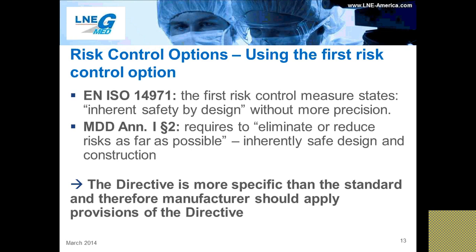The next point is a continuation of the previous one, adding information related to the first risk control option — inherent safety by design. Here, the directive gives a little more precision regarding this mode of risk control. The standard only talks about using inherent safety by design as the first risk control step, where the directive requires to eliminate or reduce risk as far as possible through inherently safe design and construction. Manufacturers should reduce risk to a minimum by implementing safe design and construction before moving to the next step of control.